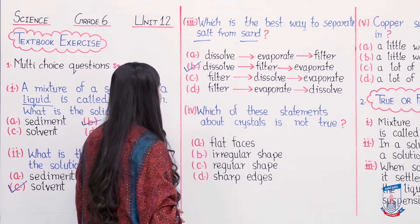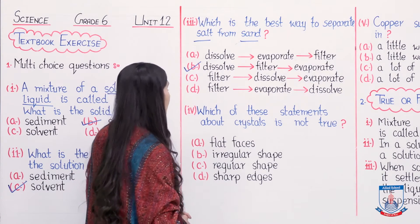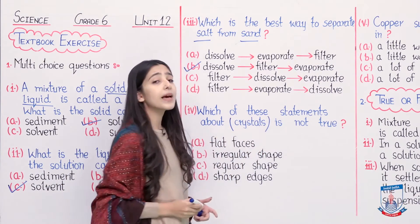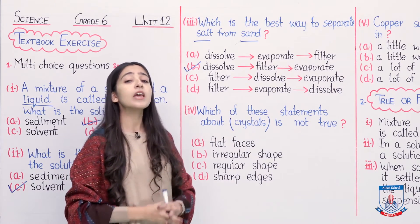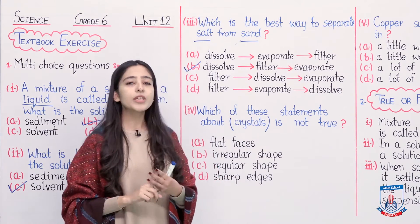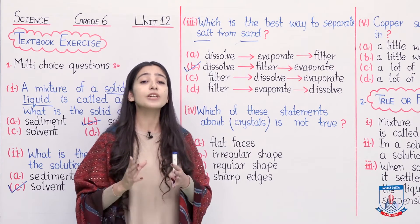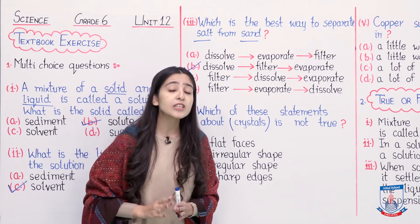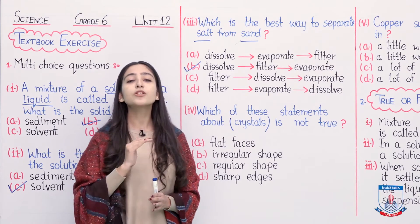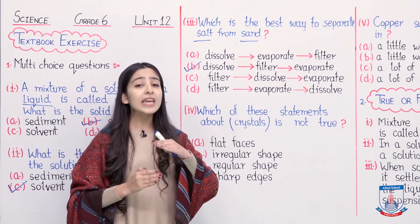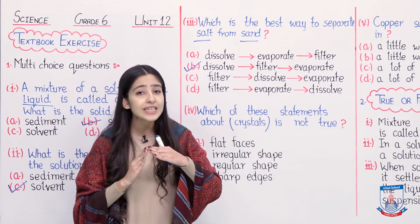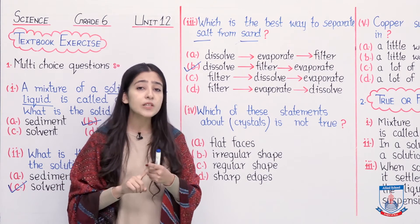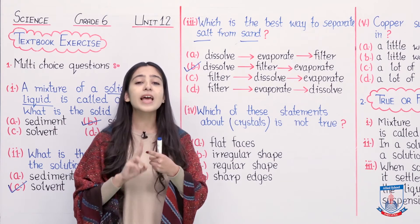Moving to statement number 4: which of these statements about crystals is not true? We studied the characteristics of crystals — there were three characteristics. The shape of crystals is definite, like a cuboid. The cuboid shape has flat faces, and where two flat faces meet there is a sharp edge. So the three characteristics are: specific regular shape, sharp edges, and flat faces.